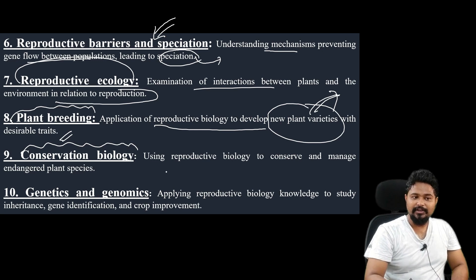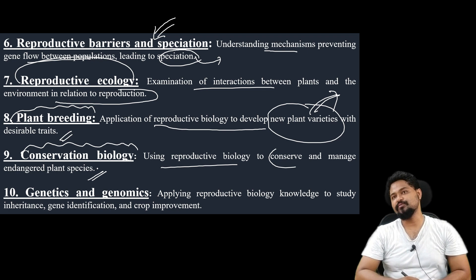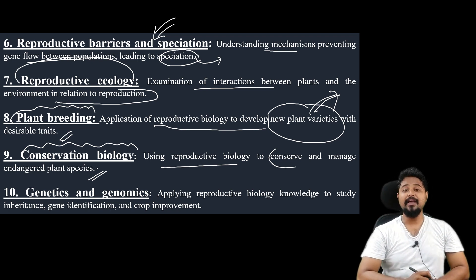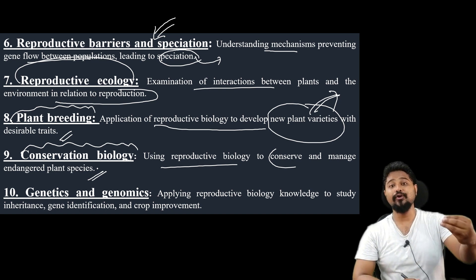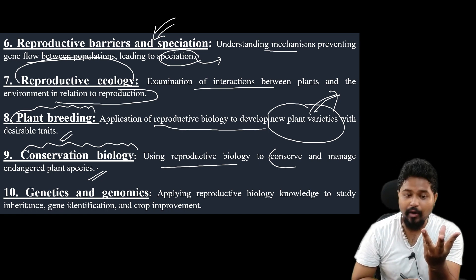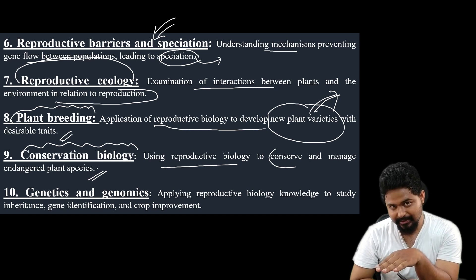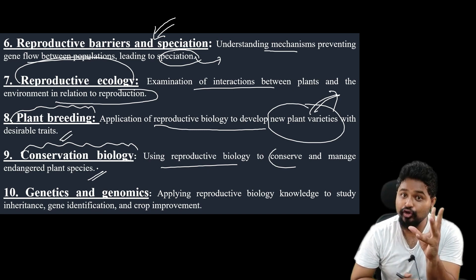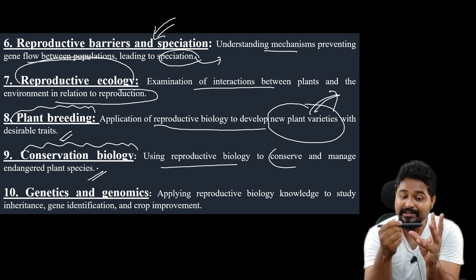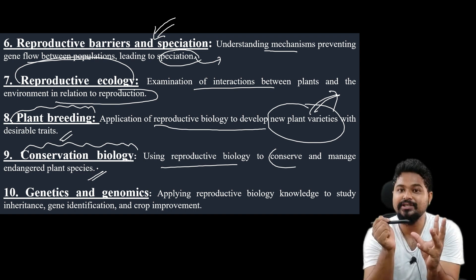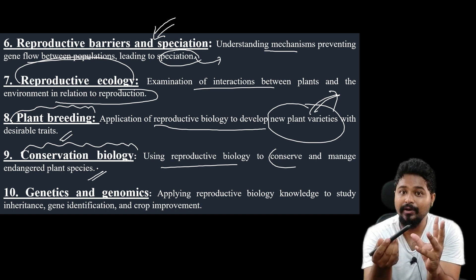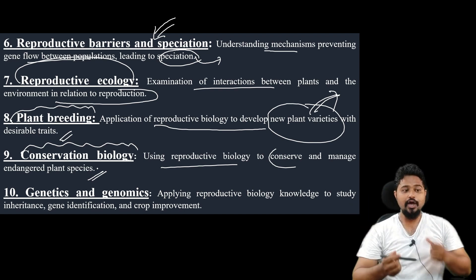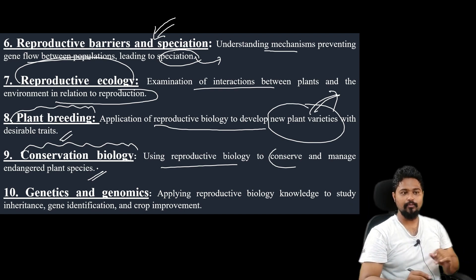Conservation biology helps you develop reproductive biology. Using reproductive biology, we can conserve and manage endangered plant species. Endangered means very vulnerable. Reproductive biology knowledge can help hold up the plant population — you can cover the plants and deal with them. Conservation biology helps reproductive biology.